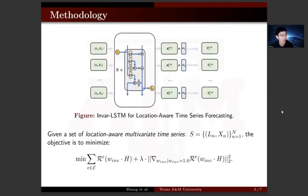To address this challenge, we introduced an invariant-based network. Given a set of location-aware multivariate time series, the objective includes two terms. The first term is an empirical risk minimization, where R can be mean square error. And the second term is a penalty term, which aims to ensure that the gradient across environments remains invariant.